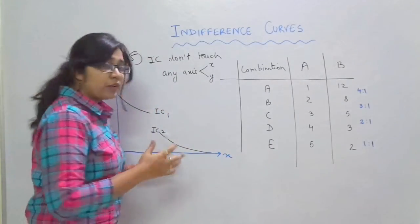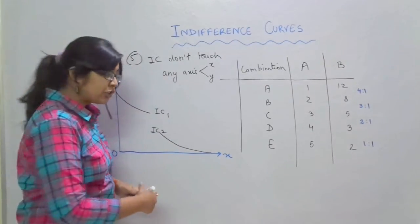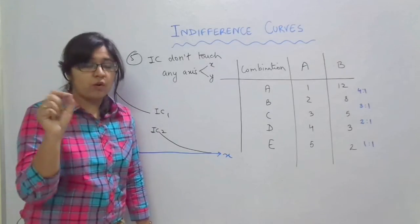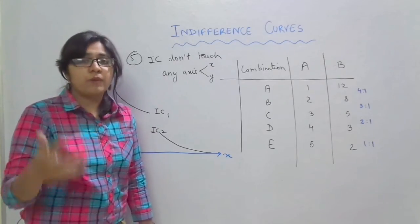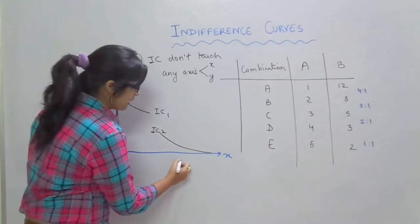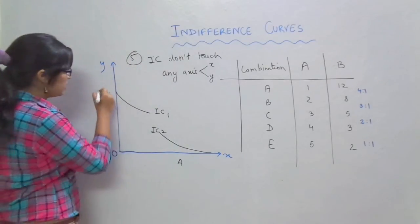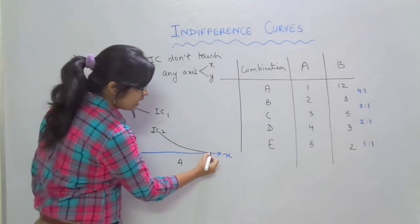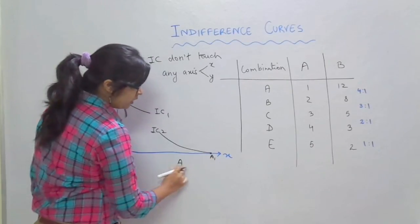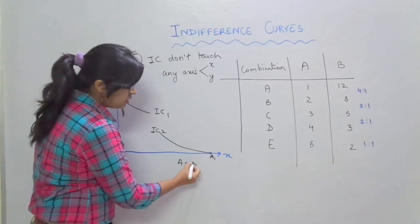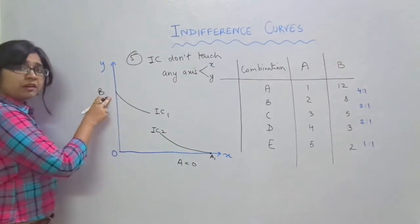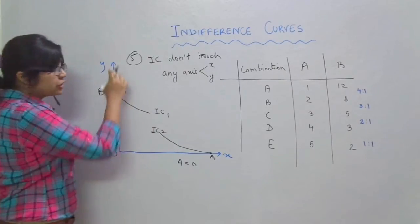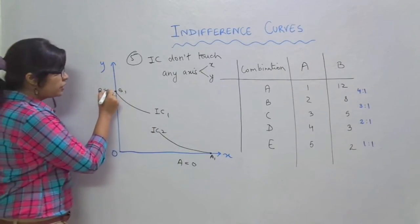So now we all know graphically if any curve touches either of the axis, for example I put good A on x axis and good B on y axis. So respectively on x axis at point A1 the quantity of A will be 0, and similarly at point B1 which is due to the indifference curve 1 touching the y axis, the quantity of B will be 0.